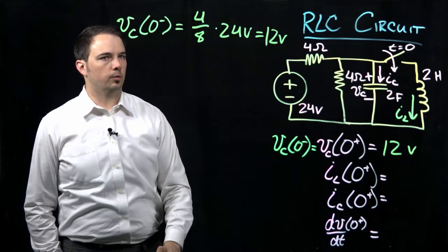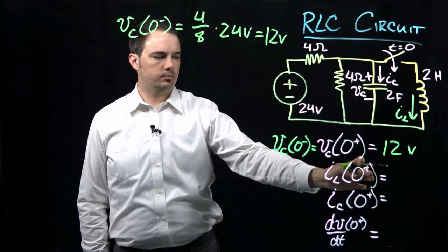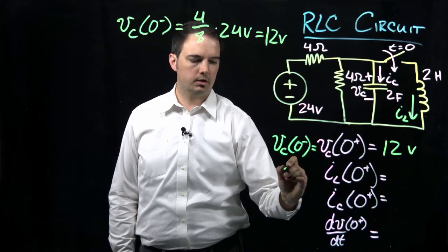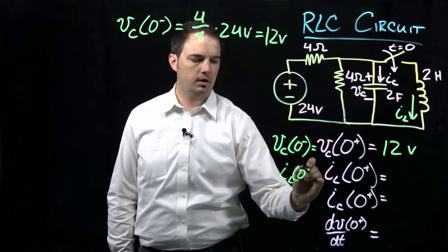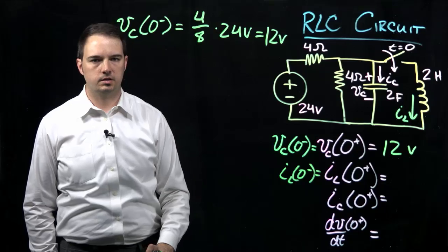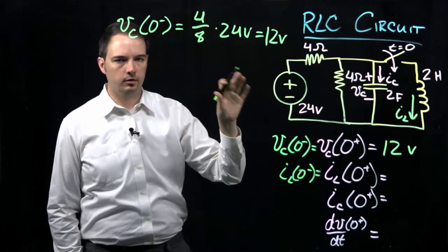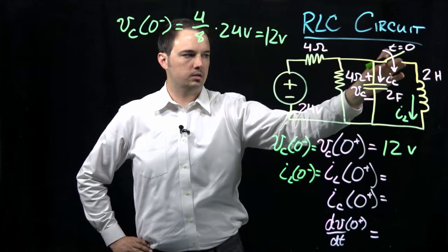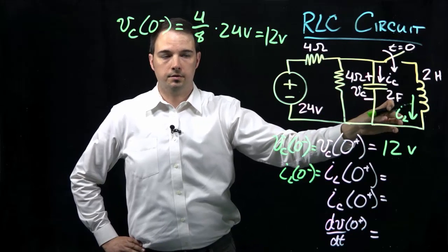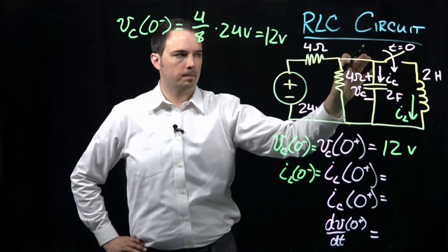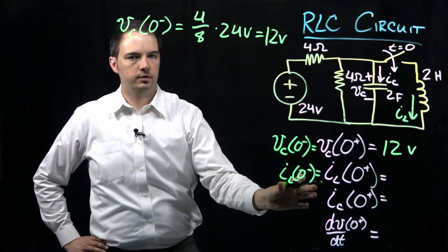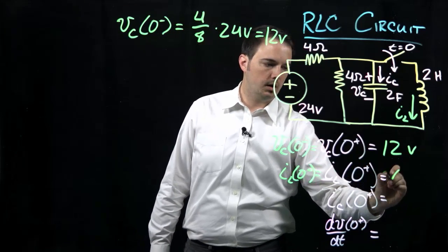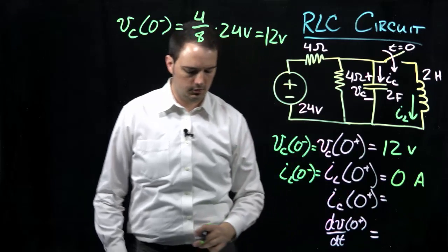Now looking at the inductor current at time zero plus: we know that the inductor current cannot change instantaneously, so IL(0+) must equal IL(0−). At time zero minus, before the switch is closed, the inductor is disconnected — it's a disconnected part of the circuit — so there can be no current through it. Therefore the inductor current at time zero plus is zero amps.